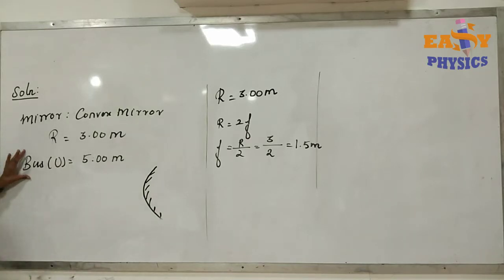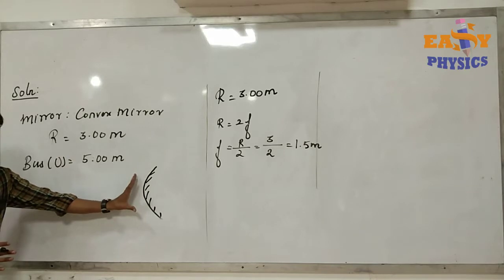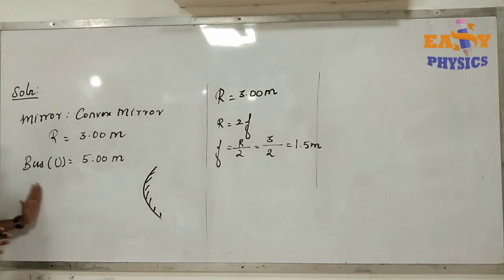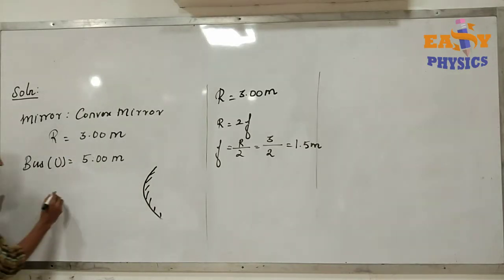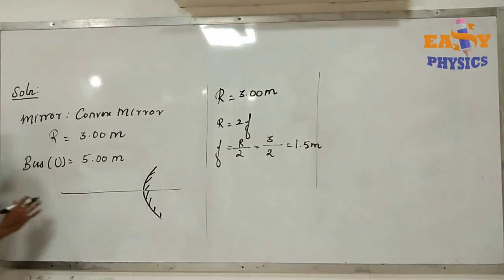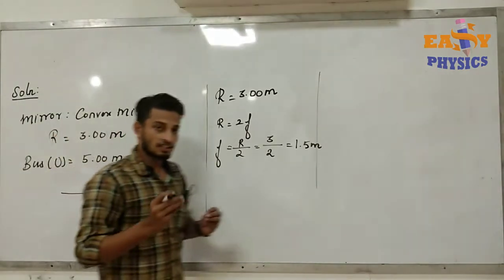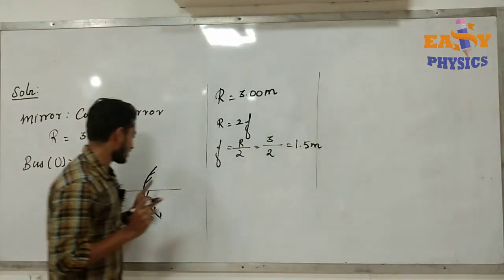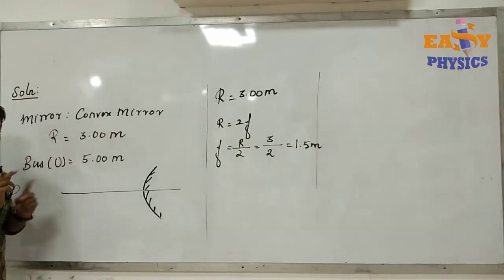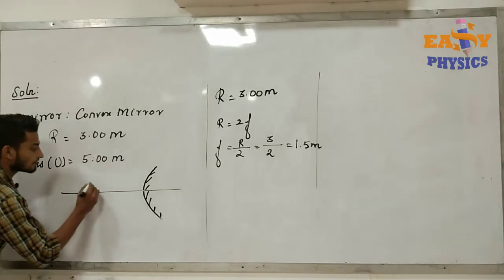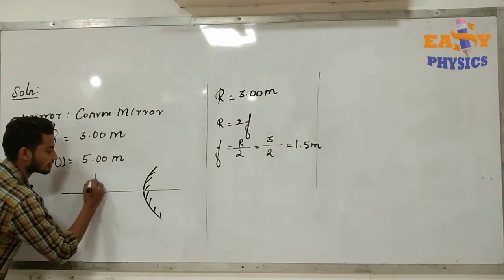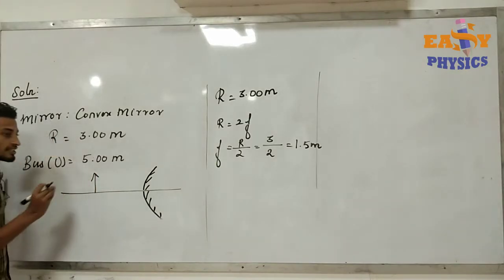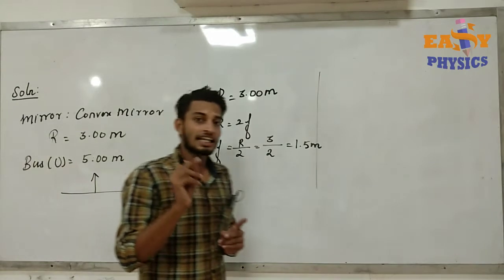The bus is located at a distance of 5 meters. For a convex mirror, the object distance is 5 meters. We have an object at 5 meters distance, and we will use the ray diagram and mirror formula to find the image.